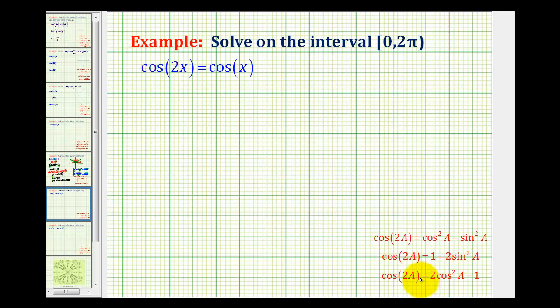Looking at our double angle identities for cosine, notice we have three options. But since it's normally best to have a trig equation in terms of one trig function, we're going to replace cos(2x) with 2cos²(x) - 1.